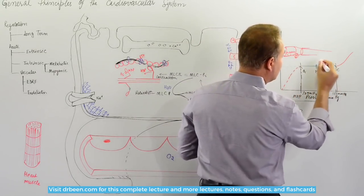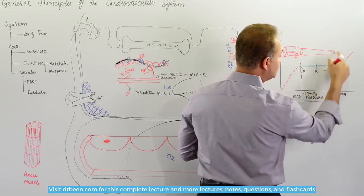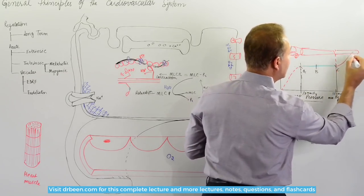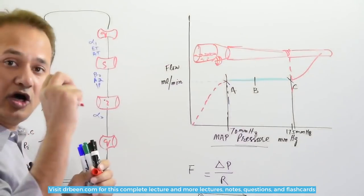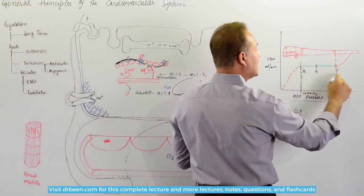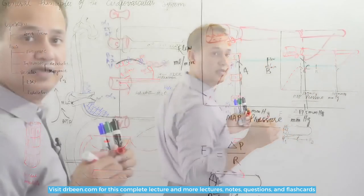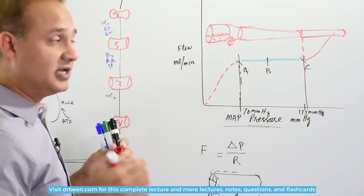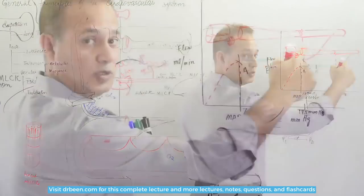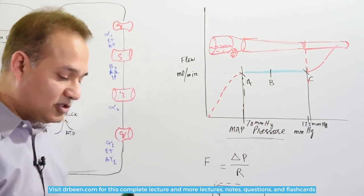the blood vessel has constricted as much as it can. It cannot constrict anymore. It cannot close down any further. Because of that, any further pressure changes, for example by the increased volume coming in, would cause the flow change as well, because the blood vessel is not able to control it anymore. So this also tells us one more thing,